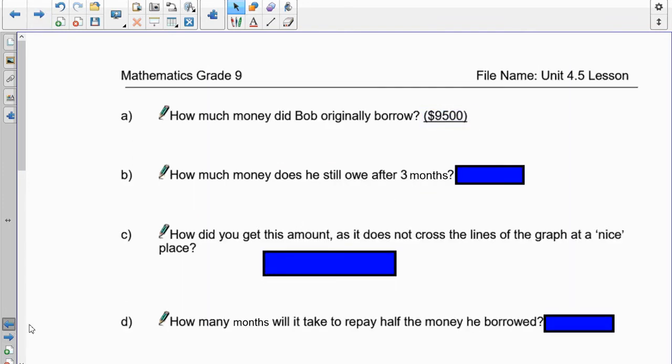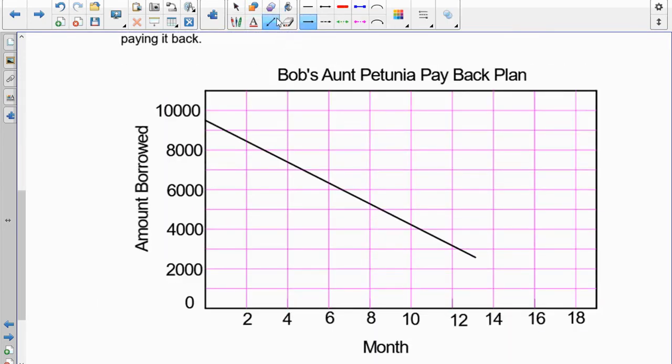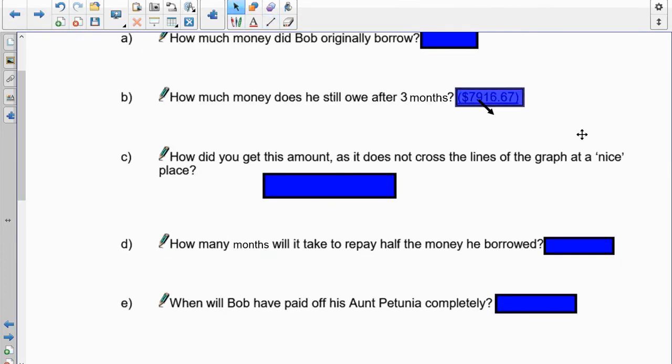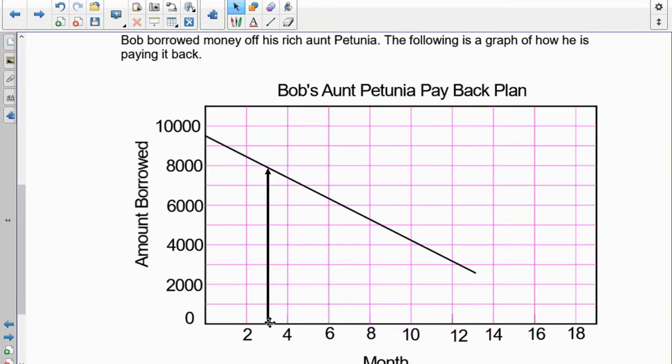How much does he owe after three months? Well, to find that out, we have to go to where the three months are, which is right here. And you have to go straight up and you'll notice it gets to there. And you'll notice we're not quite on the line, are we? So, this is going to be 7,900 and some there, right? So, we're going to go 7,950 probably. Right? So, there's our 7,916 dollars. That's the actual amount because I made the graph. How did you get this amount as it does not cross the lines of the graph at a nice place? Well, what we did here is we went up, found where that location was and then we went from there straight across and we had to estimate.